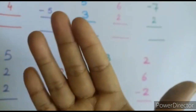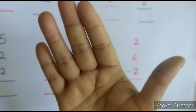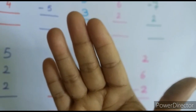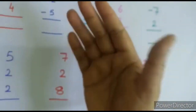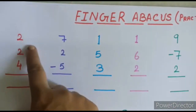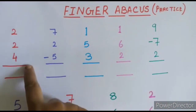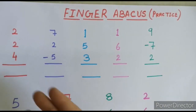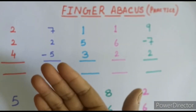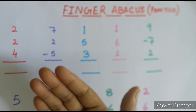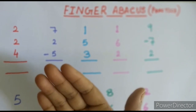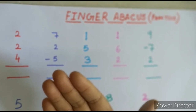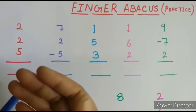Now all of you understand how we can represent digits 0 to 9 in our right hand. I have shown you examples, and now I am going to show you how to represent numbers, add numbers, and subtract numbers with the help of your right hand fingers from digits 0 to 9.